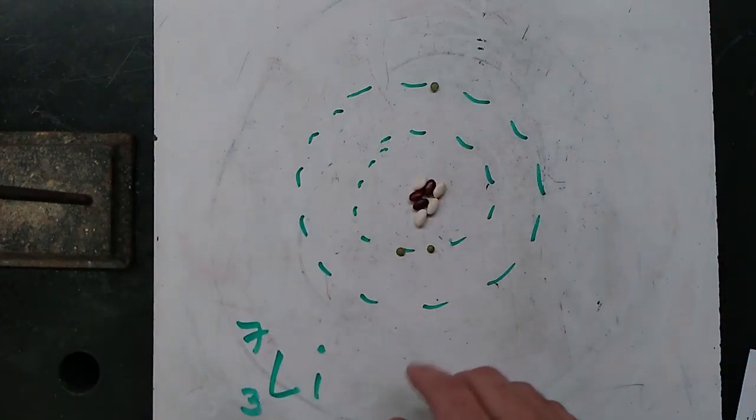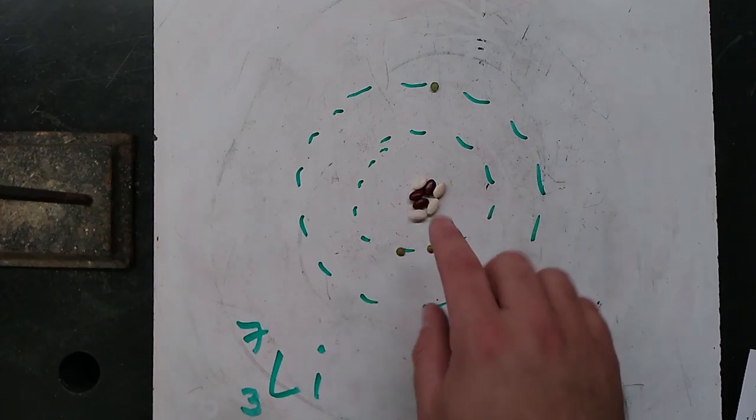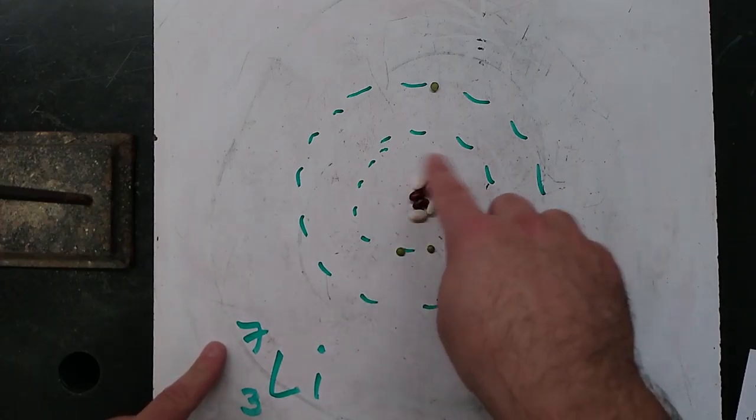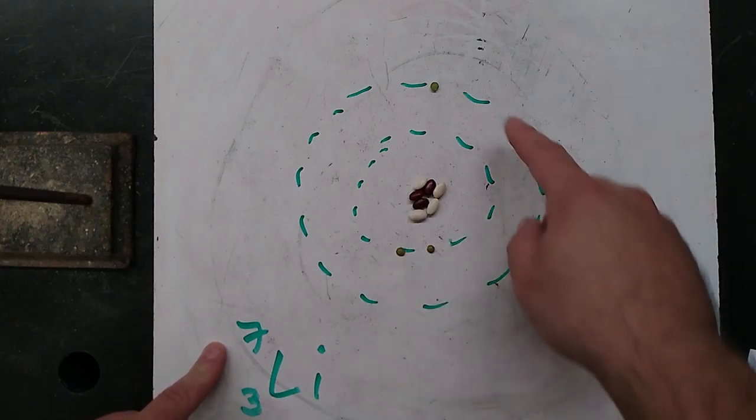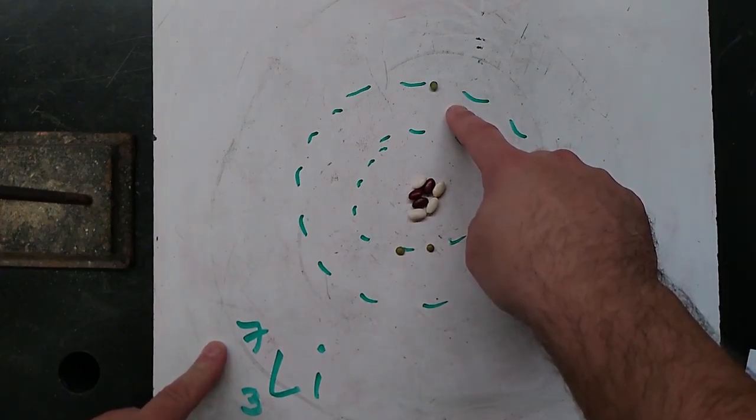So here's our Bohr model for lithium, right? Three protons, and then we've got seven all together, so four neutrons. We've got two electrons in the inner shell, one electron in the outer shell.